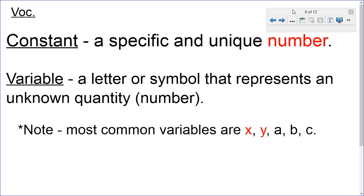Here are some vocabulary words that you should know. Constant is a specific and unique number, so a constant is a number. Variable, that's a letter or symbol that represents some unknown quantity or some unknown number.